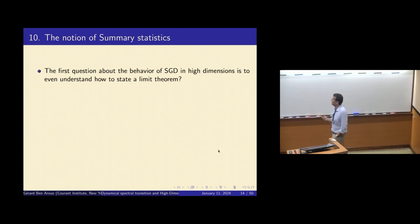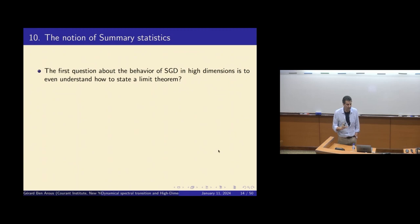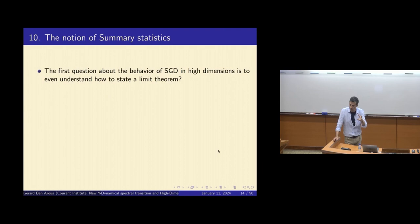The first question about the behavior of SGD in high dimension is how you even state the limit theorem. When you're in a mean field limit and go to measures, that's one thing. But here you have a flow in dimension D going to infinity — what does it mean that it converges? Normally in physics, when your quantities are exchangeable, you look at the empirical measure and it converges to something. But here, there's no reason to do that — this thing is not exchangeable, so the empirical measure does not completely characterize the system.